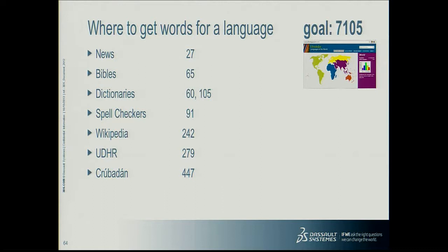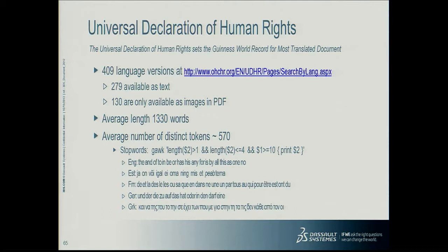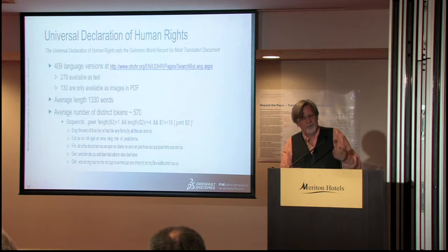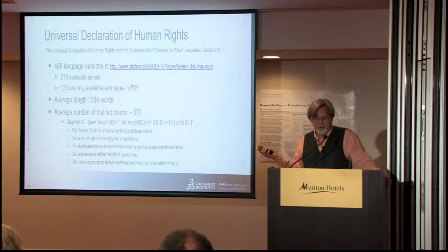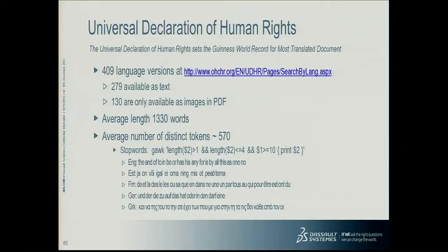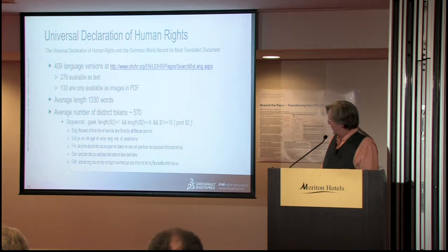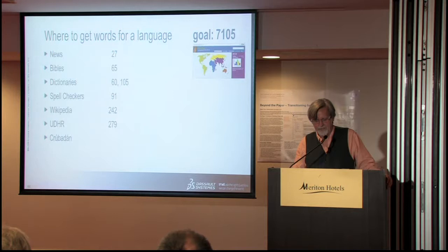There's the Universal Declaration of Human Rights, with 400 versions on the UN website. Unfortunately only 279 are available with text — there are lots of images that are in PDF and just photos of typeset language, so they can't be exploited yet by a computer. The average length is about 130 words, and there are about 500 different words in this Universal Declaration. But it gives you an idea of the stop words. So you can use this to find the anchor words for these 279 languages and find the common words that appear many times to use as anchors if you want to crawl the web. That's 279.